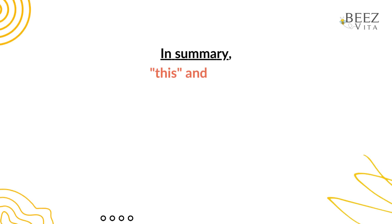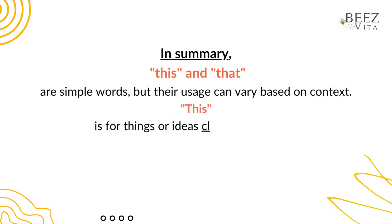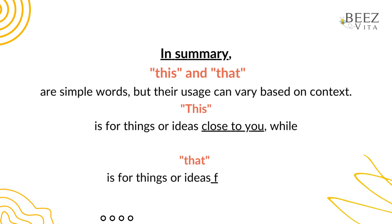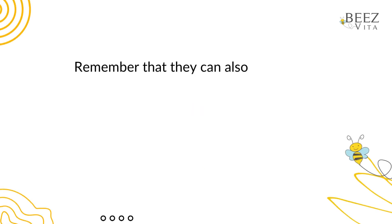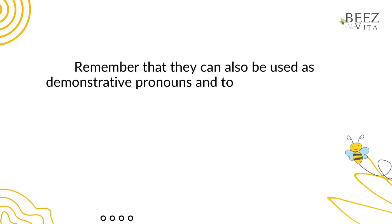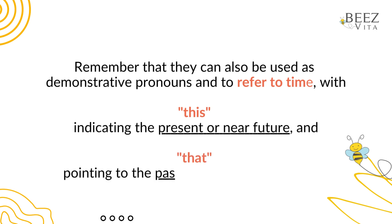In summary, this and that are simple words, but their usage can vary based on context. This is for things or ideas close to you, while that is for things or ideas farther away. Remember that they can also be used as demonstrative pronouns and to refer to time, with this indicating the present or near future, and that pointing to the past or a more distant future.